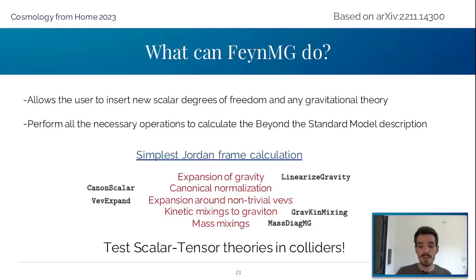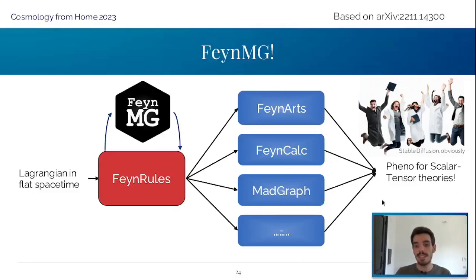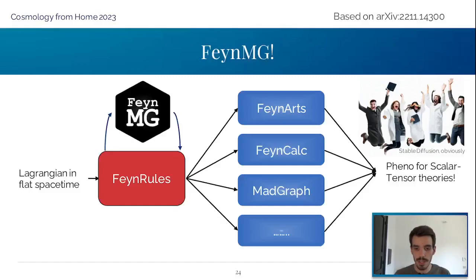Once you have that, the best thing is you can test scalar tensor theories in colliders. Because now you have the FeynmG output within FeynRules, you can use all those amazing compatible packages to generate any kind of phenomenological prediction for scalar tensor theories.